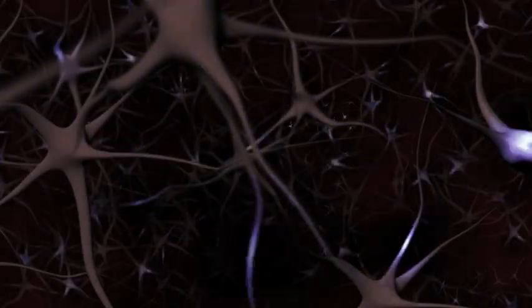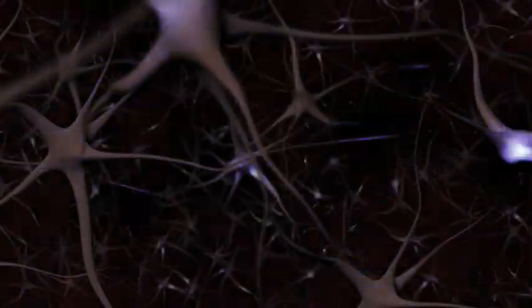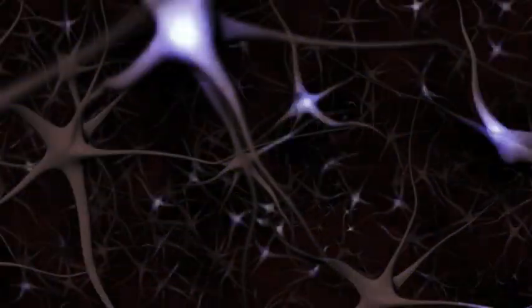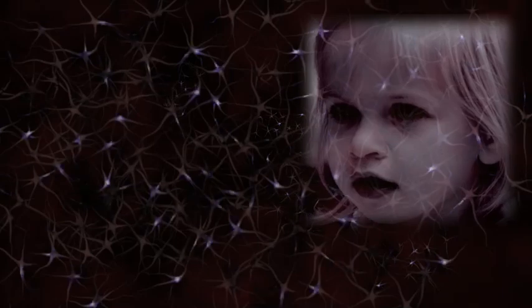Each neuron can turn its neighbors on or off depending on the signal it sends. And the resulting stable patterns of neuron firing represents memories, and images, and thoughts.